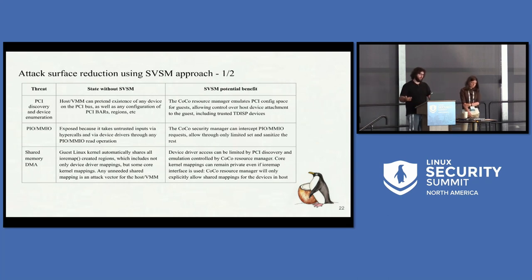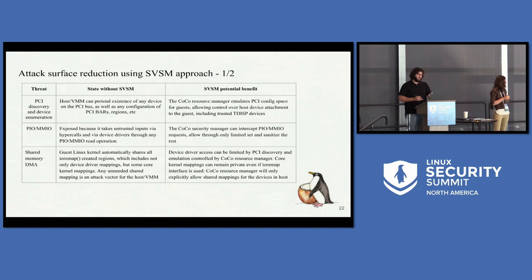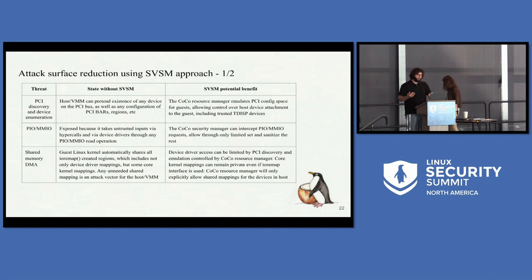How do things change from a threat model point of view with SVSM? Some of these things are theoretical and not necessarily implemented yet, but they are things we could potentially do. In terms of PCI discovery, the host can pretend a device exists that doesn't. The idea is that the SVSM could emulate the PCI configuration space — the registers with vendor ID and so on — including TDISP devices. The CPU communicates with devices via program IO or memory-mapped IO — but those are hypercalls, so you're taking untrusted inputs. The security manager could intercept PIO and MMIO requests, allow only a limited set, and sanitize the rest.